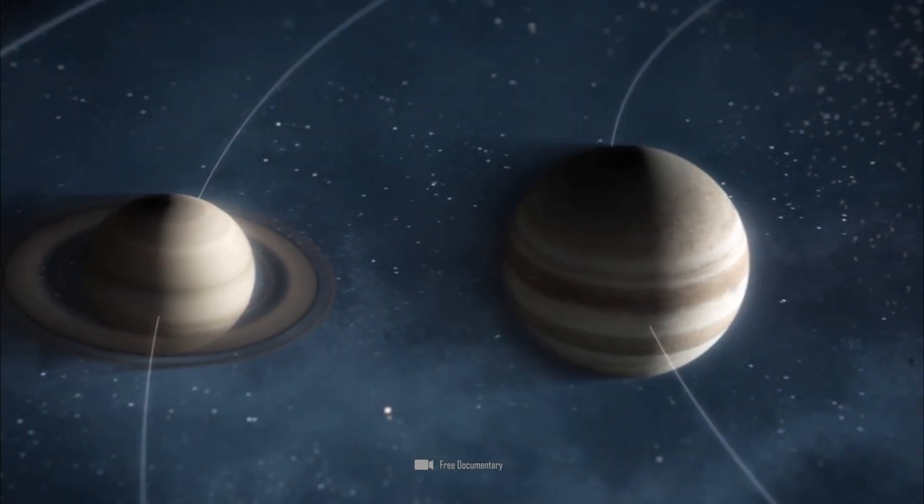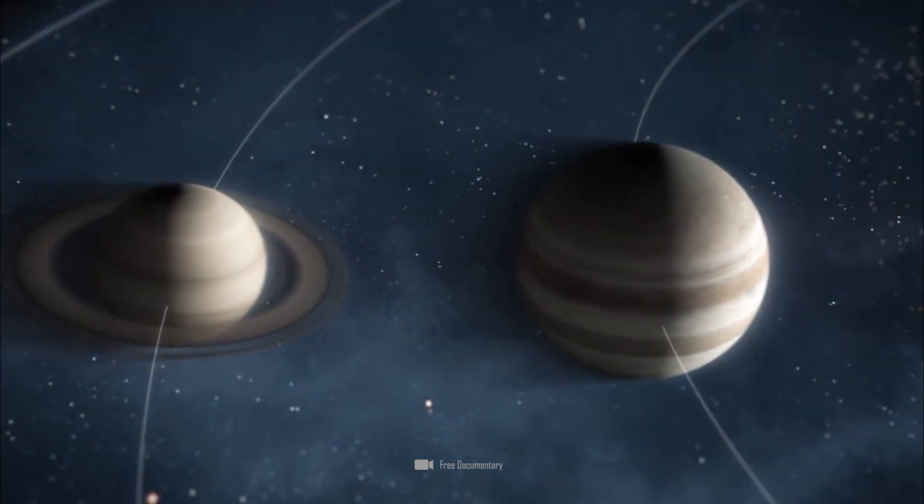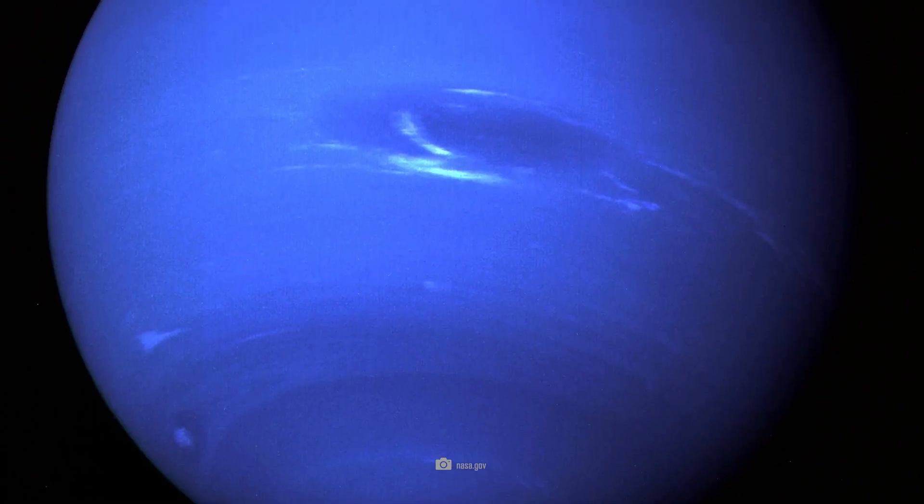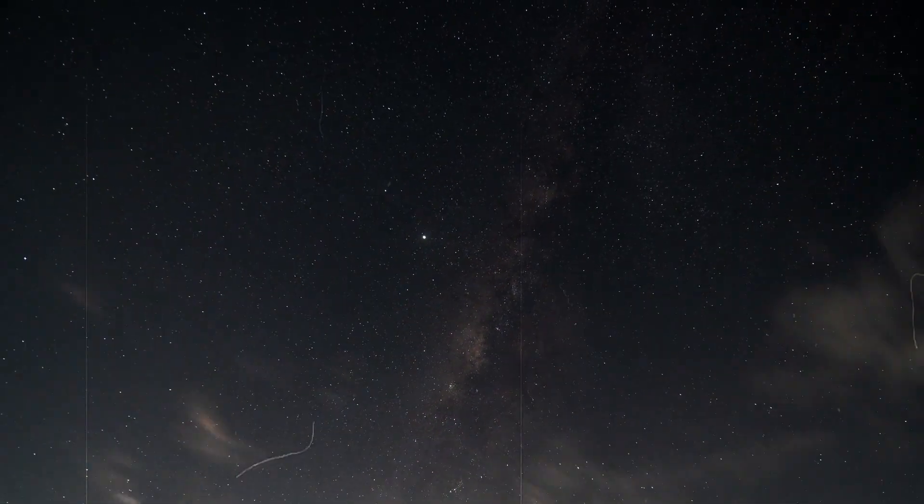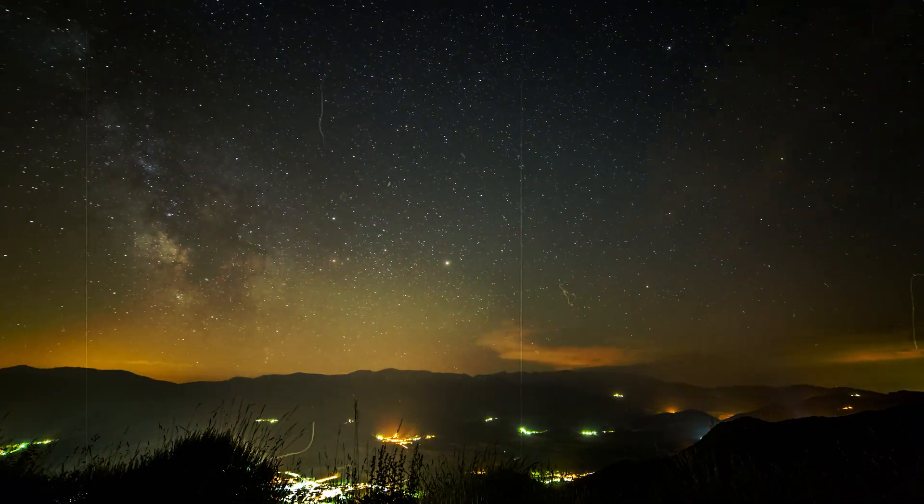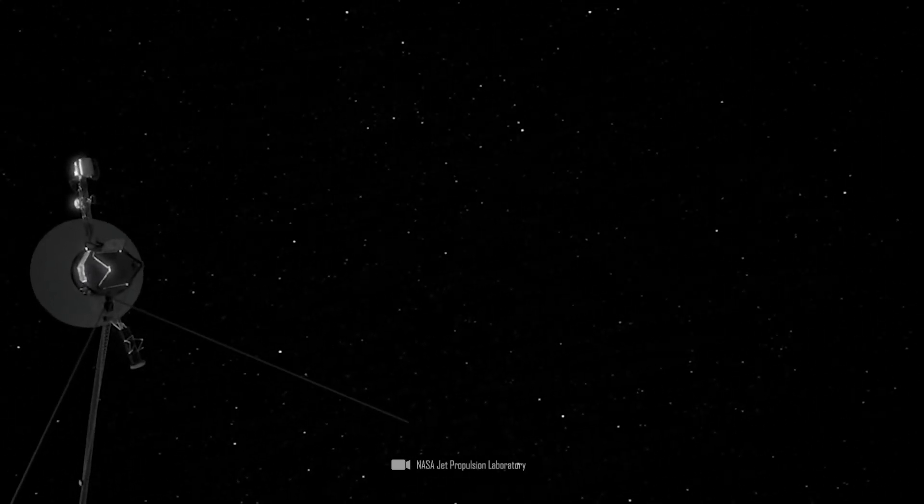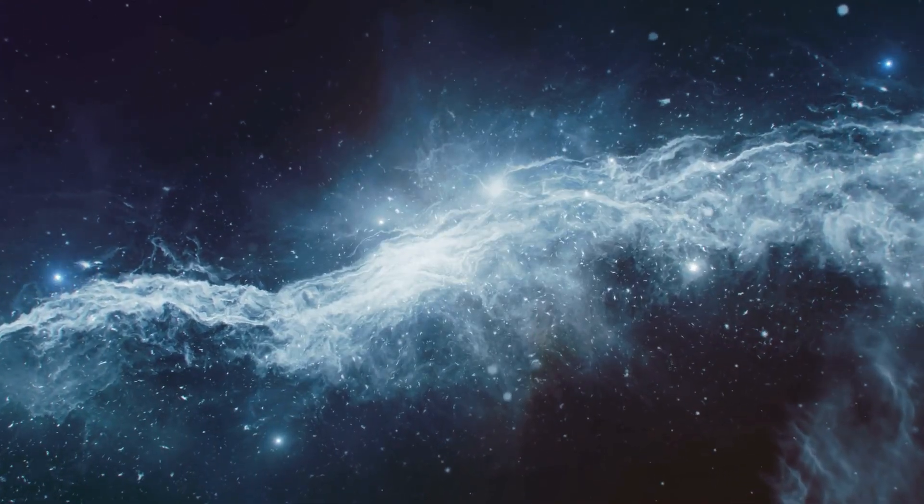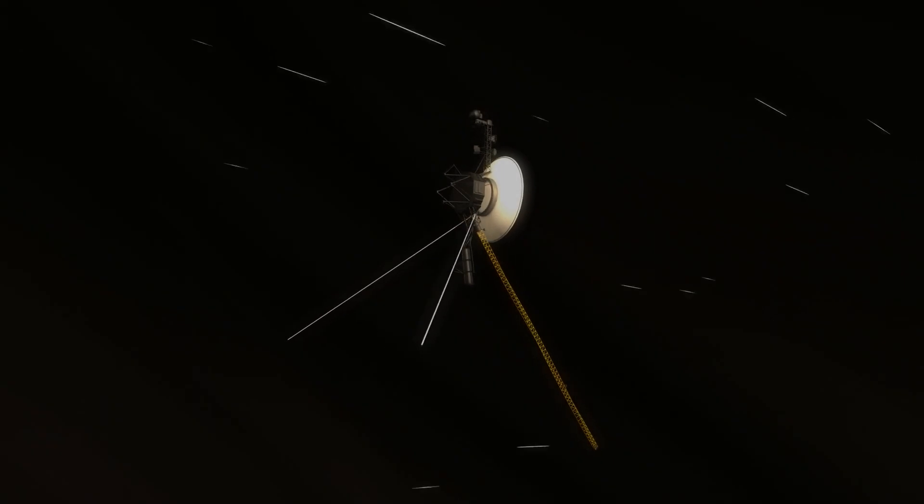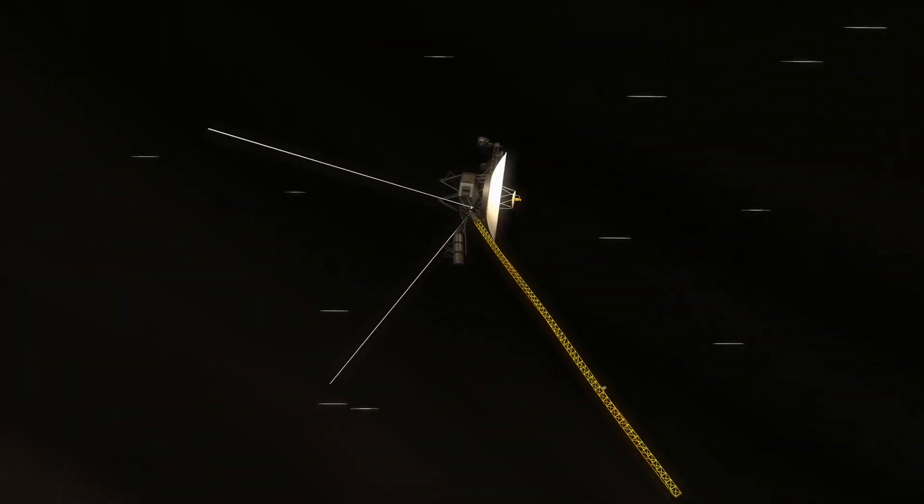The Voyager probes are regarded as milestones in space exploration and they have provided us with never-before-seen images and impressions of the outer planets. That was supposed to be the end of it, but their mission has continued to this day. Can Voyager 1 really fly forever and what will it see on this long journey?